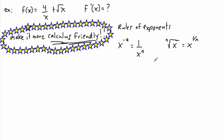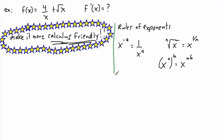And last, another property: if we have x to the power of a, all raised to the power of b — so an exponent to the power of something else — it's the same thing as x to the power of a times b. Those are just a few little rules of exponents to try to remember, and they're going to come in handy.